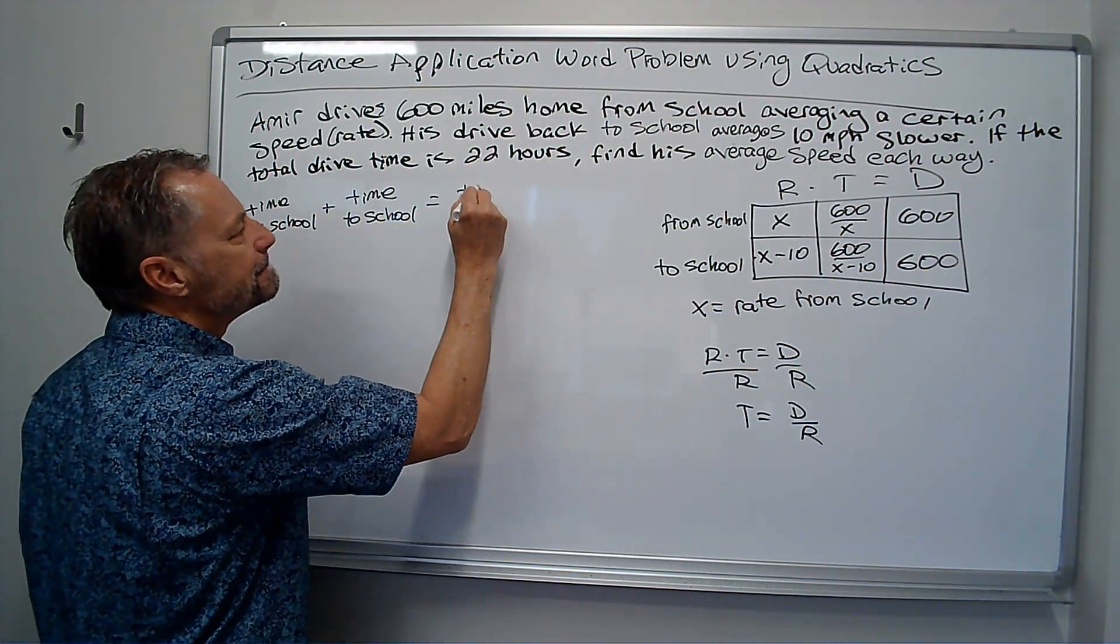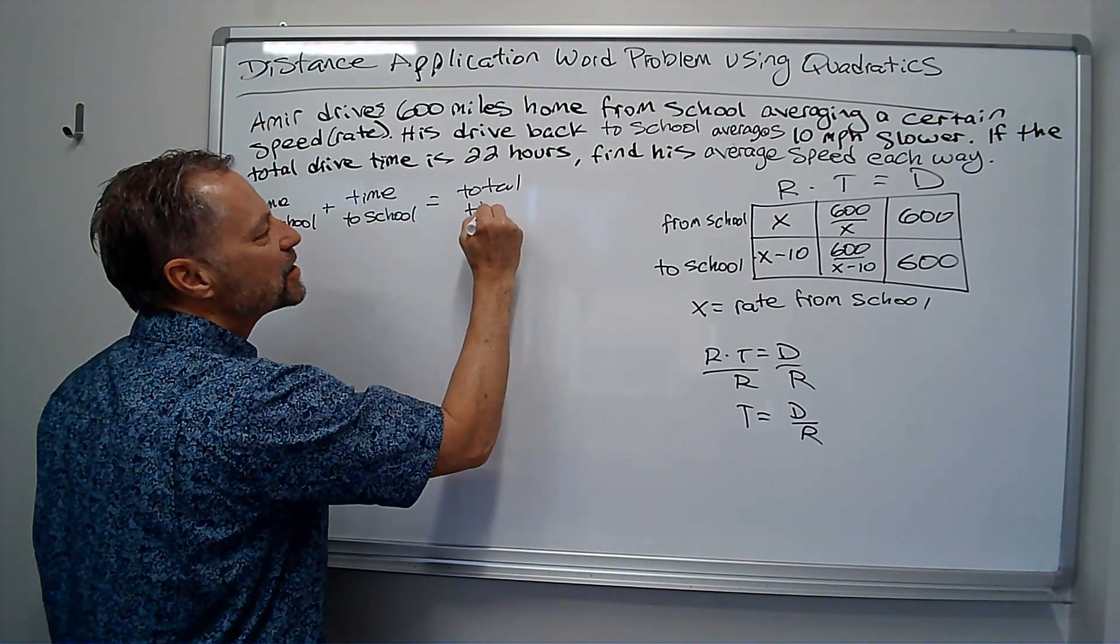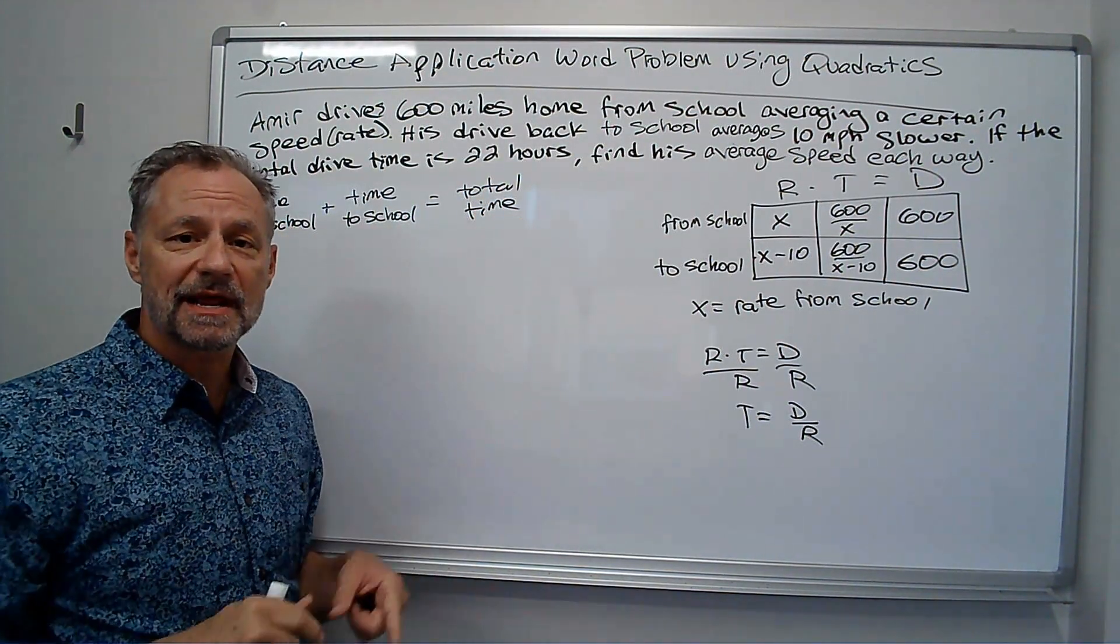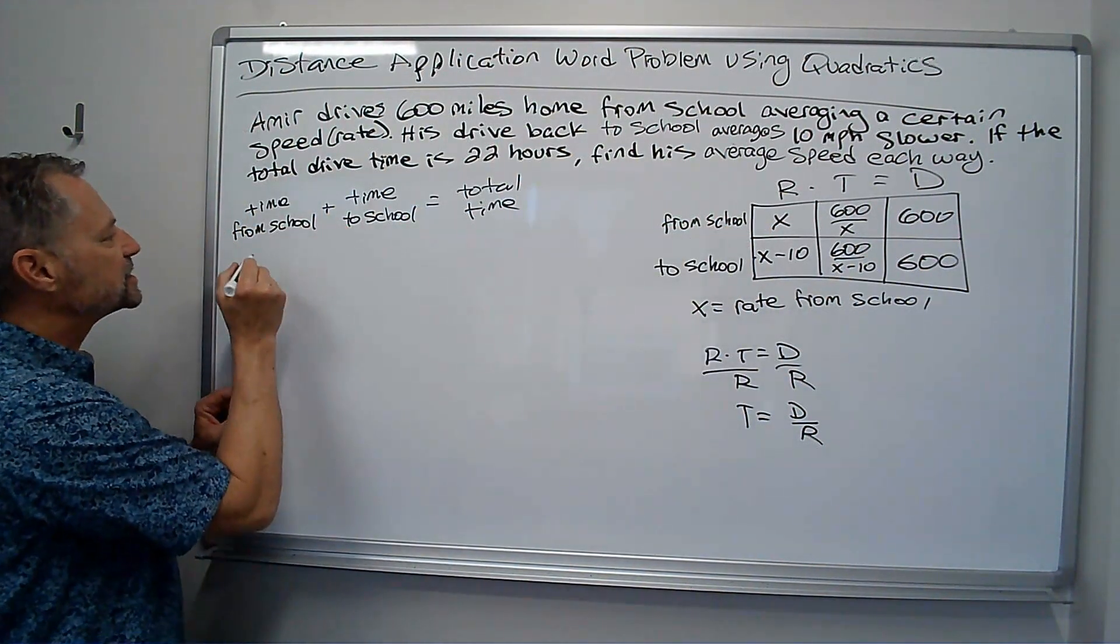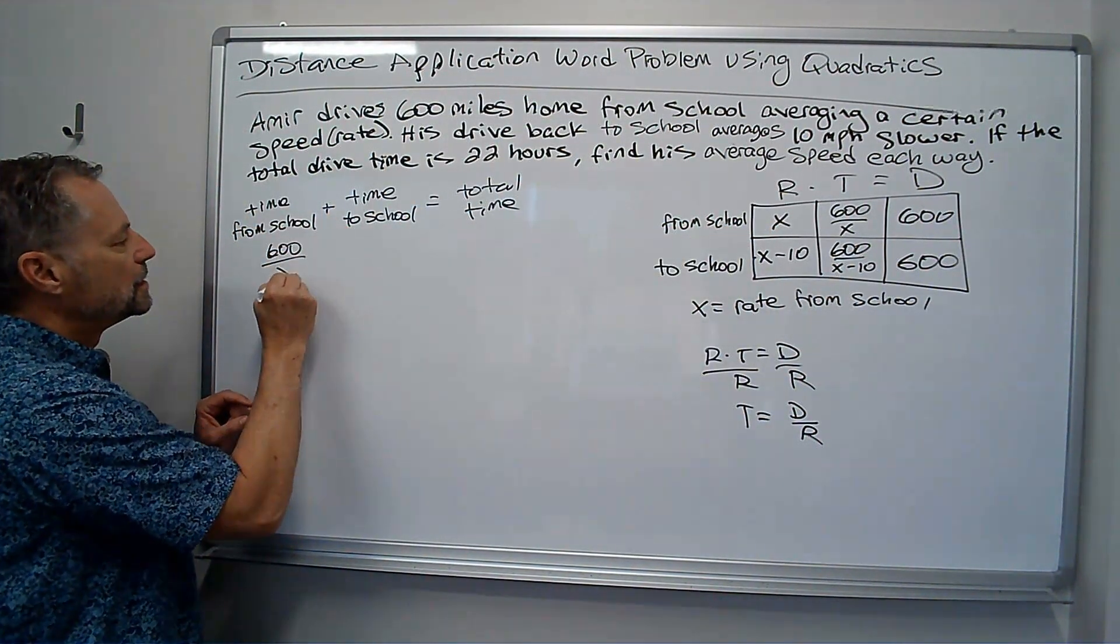So, here's where my equation is coming from. I'm just going to put that in words. His time from school plus his time back to school, that's his total time. That's where my equation is going to come from. Where does it come from? Drops straight out of the box. So, his time from school was 600 over X.